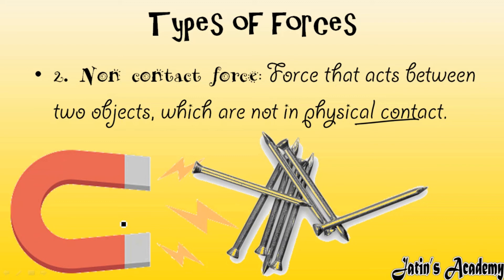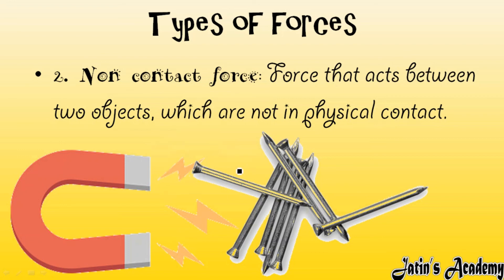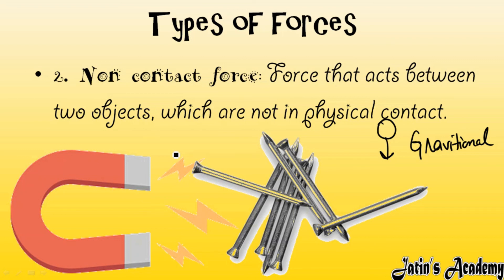Second type: non-contact force. Non-contact force acts between two objects when they are not in physical contact. For example, with a magnet and iron nails: you don't need to stick the iron nail to the magnet — just bring it near and the magnet attracts the iron nail through its magnetic field, without physical contact. Similarly, gravitational force acts without contact: if you throw a ball upward, it automatically comes down due to gravity. Magnetic force and gravitational force are examples of non-contact forces.